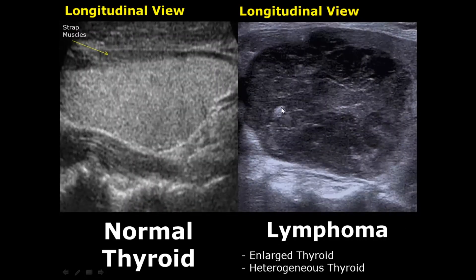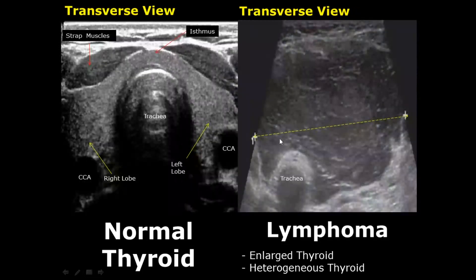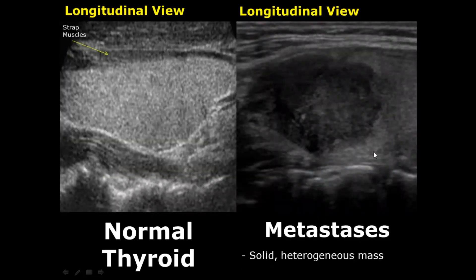A lymphoma can involve the entire thyroid gland, leading to enlargement and a heterogeneous appearance. In this case you can see an enlarged thyroid gland with heterogeneous echo texture suggestive of lymphoma. Metastasis to the thyroid can have variable appearances based on the type of primary cancer — usually they are solid and heterogeneous. In this case you can see a lymphoma metastasis to the thyroid.